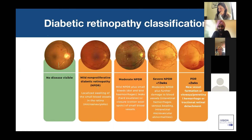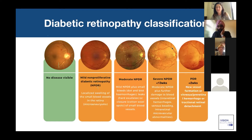The condition you really need to be mindful of and consider onward referral for is what we call severe non-proliferative diabetic retinopathy or pre-proliferative diabetic retinopathy. This typically should be seen by the hospital service within about 13 weeks, and often represents the hallmark where patients may be switching from non-proliferative into the proliferative form of the condition.